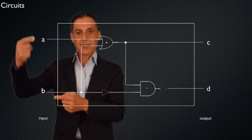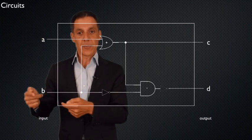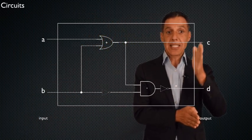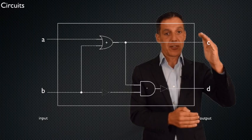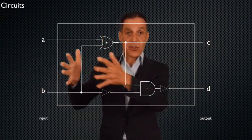So typically in a circuit, the input is on the left. I have two inputs here, A and B - this can be a zero or one, this can be a zero or one. I have two outputs, C and D. Of course, these have to be zero or ones because they are the output of pushing binary inputs through a series of gates.